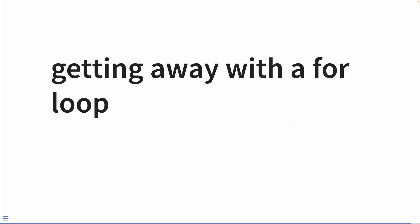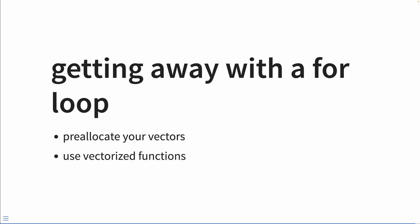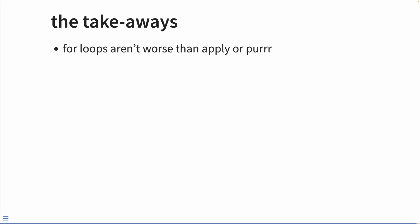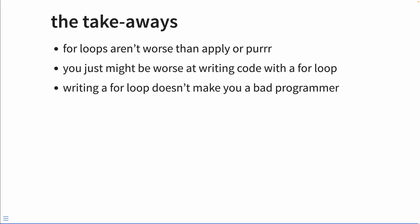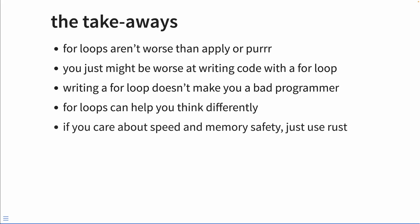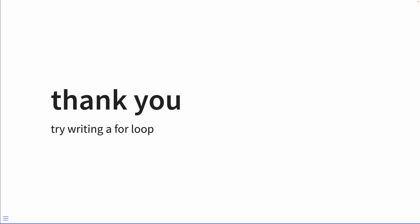To recap, to get away with a for loop: pre-allocate your vectors and use vectorized functions. The takeaways: for loops aren't worse than apply or purrr — you might just be worse at writing code with a for loop. Writing a for loop doesn't make you a bad programmer, and sometimes for loops can even help you think differently. And if you really care about speed and memory, just use Rust. Thanks. Try to write a for loop sometime.